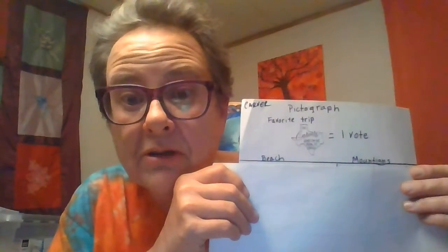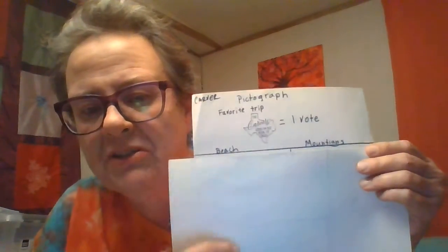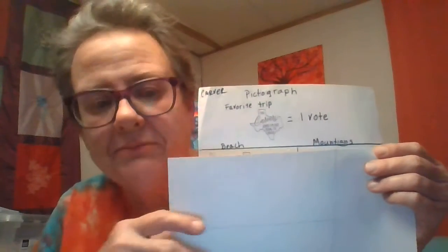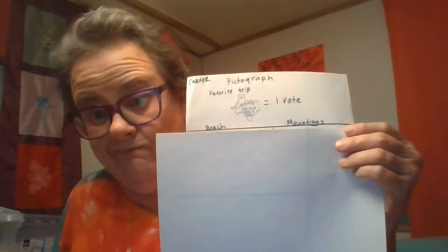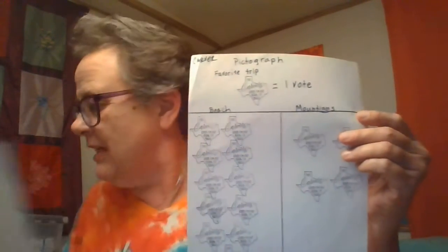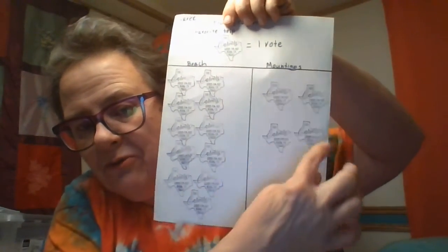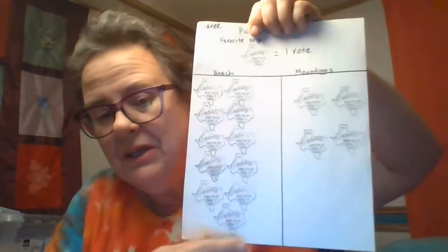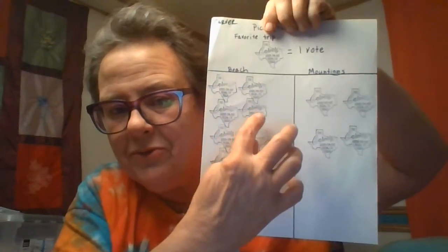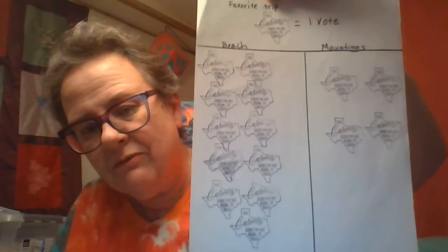Looking at my tally marks chart for beach and mountains — it's a little sloppy — for beach I had 11 tally marks, so that's 11 votes. So I need to put 11 stamps in the beach column. For mountains it said 4 votes, so I put 4 stamps in the mountains column. Each stamp equals one vote — four for mountains, and one, two, three, four, five, six, seven, eight, nine, ten, eleven for beach. That's my pictograph.